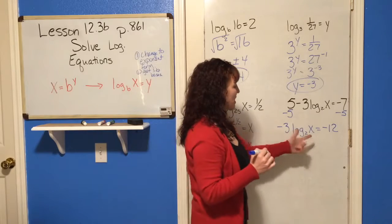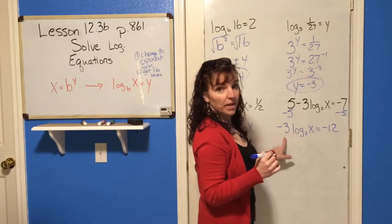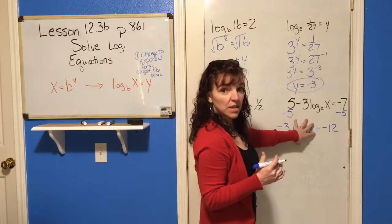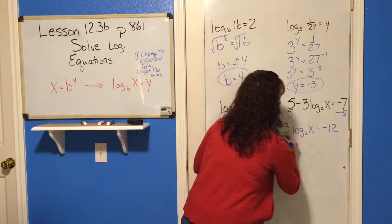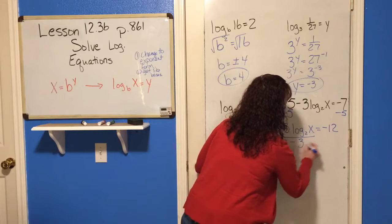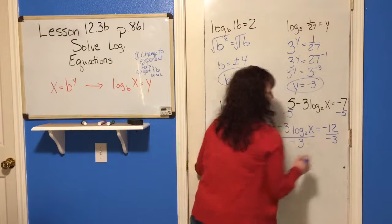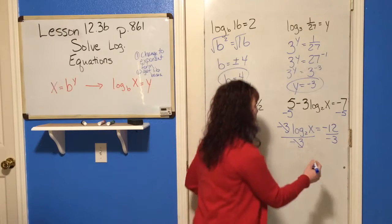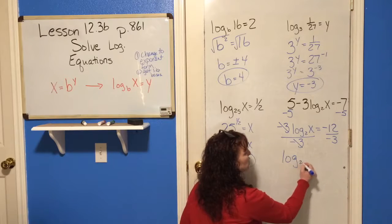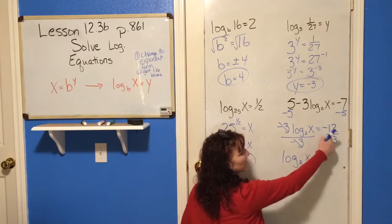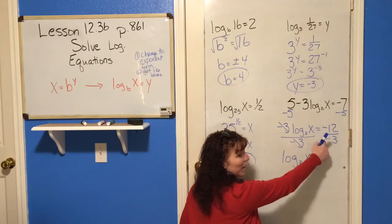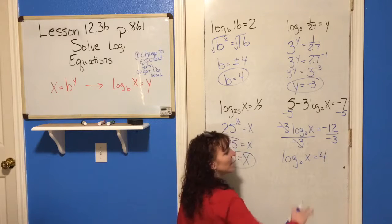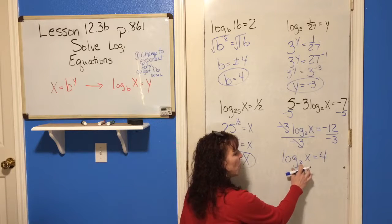And now, this log is still multiplied by something. So, you divide. Just as if this whole log were just the x, you're going to get the whole log by itself. So, divide by negative 3. And so now, because those cancel, now you have log base 2 of x equals negative 12 divided by negative 3. Negative divided by negative is a positive. 12 divided by 3 is 4.